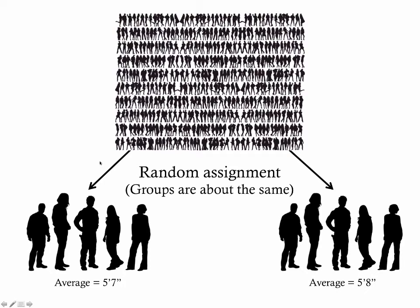Now, one of the issues that comes up is that you have to have enough participants in each group. So if you just picked one or two participants, there's a decent chance that even with random assignment you happen to grab two really tall guys for one group and two really short guys for the other group.